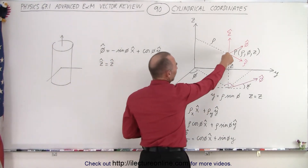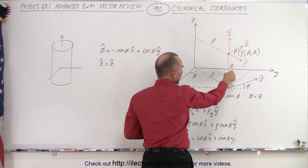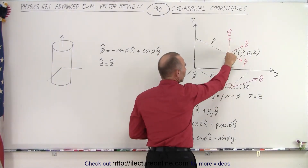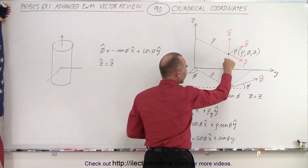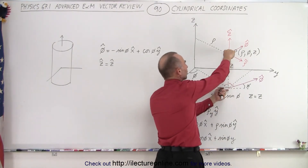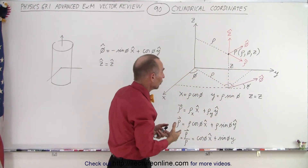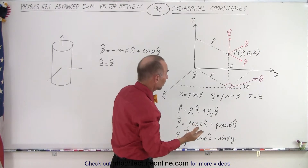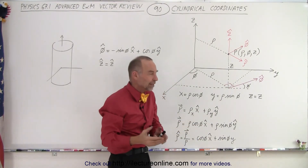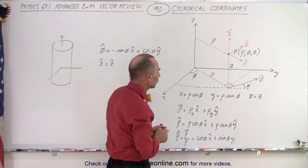Let's take a point in space. If we project it straight down, we get onto the XY plane. The distance from our point to the XY plane in the Z direction is indeed a Z component. The Z component in cylindrical coordinates is the same as the Z component in Cartesian coordinates.